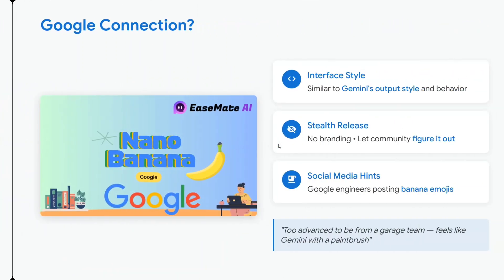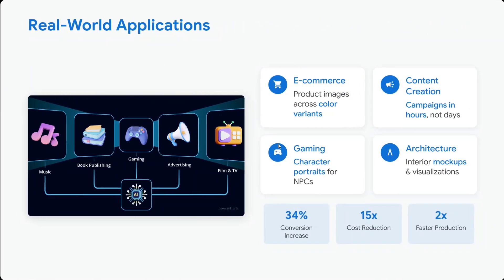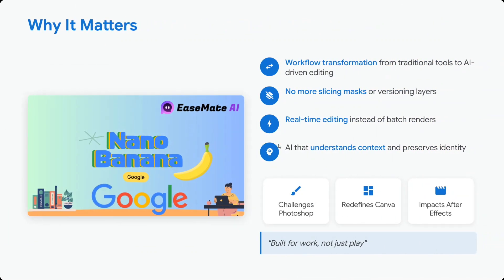The Google connection: the interface is quite similar, the release was stealthy, and there are social media hints — Google engineers are posting banana emojis, which is why people are associating nano banana with Google. Real-world applications are clear: if you can render images at that speed, it's a great help in the gaming arena. Workflow transformation — no more slicing masks, real-time editing — makes it very impactful.